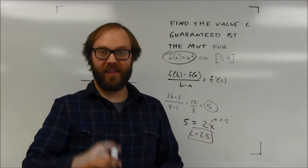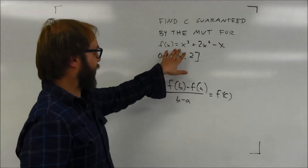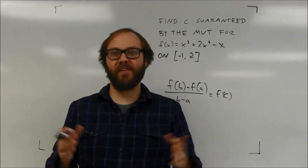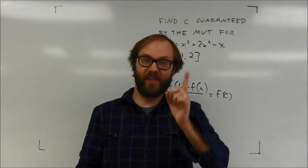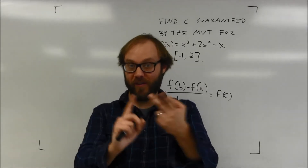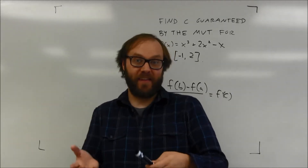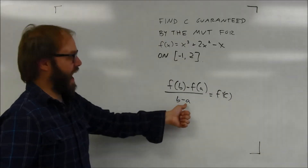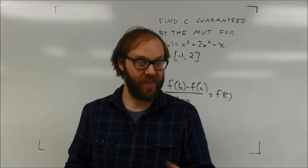Now I'm going to look at a slightly tougher example of the mean value theorem. This time I'm given the function x cubed plus 2x squared minus x on the interval between negative 1 and 2, and I'm asked to find the value of c guaranteed by the mean value theorem. This is a polynomial function, which means it's continuous and differentiable for any values of x, so I know it's continuous and differentiable on the interval. I need to set the average rate of change equal to the derivative and see where that occurs.